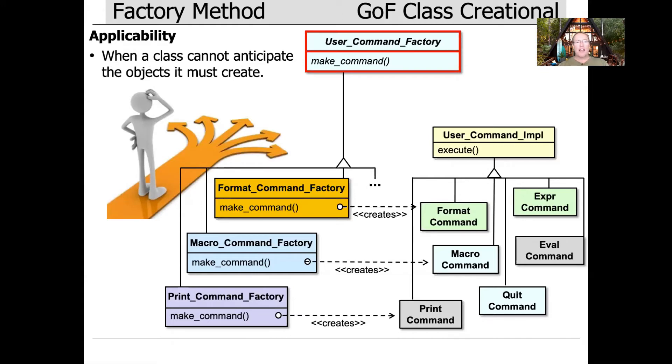You should apply this pattern when a class can't anticipate the objects it must create. In other words, we don't necessarily know at design time all the different kinds of variabilities that could exist over time. So instead of hard-coding those things, we're going to make a factory method that's going to defer the choice for us.